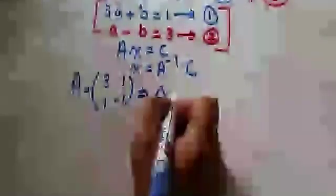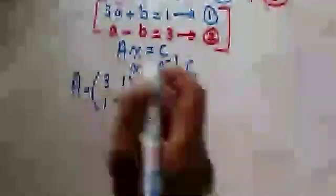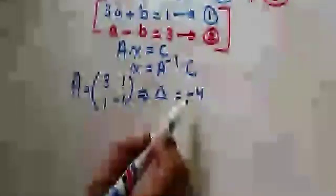الـdelta بتاعتها بتساوي ايه؟ 3 times negative 1 minus 1 times 1 = negative 3 minus 1 = negative 4. يبقى الـdelta equals negative 4.